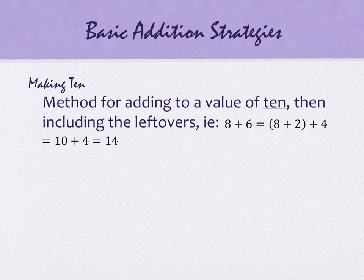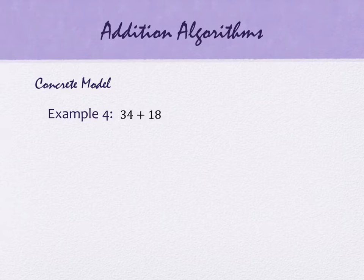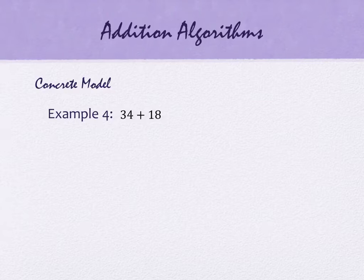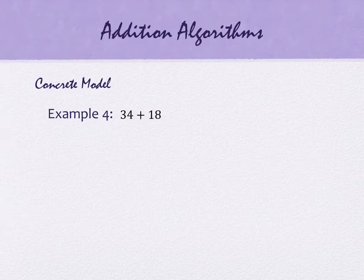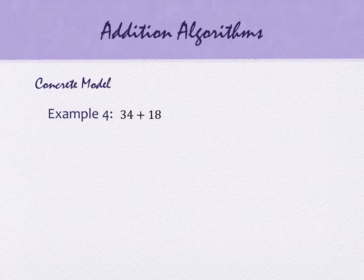Now we're going to look at some addition algorithms. The first is the concrete model. Concrete typically means you can touch and feel something — like base 10 blocks, which are fantastic for this. Unlike money, where 10 pennies turning into a dime doesn't visually make sense, base 10 blocks let you visually see how pieces stack together to make something bigger.